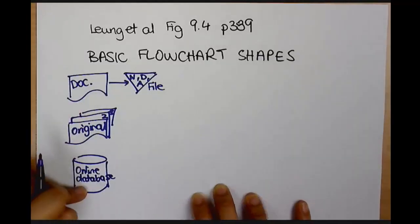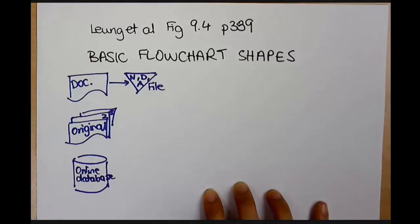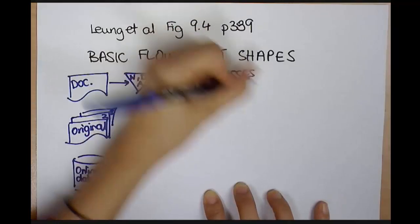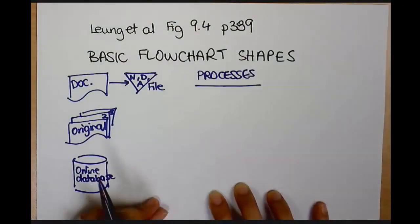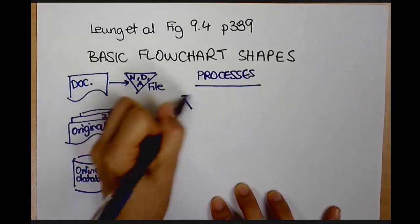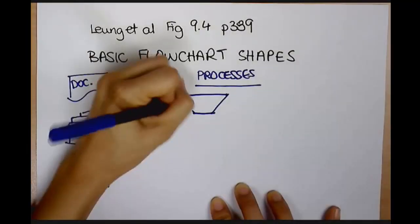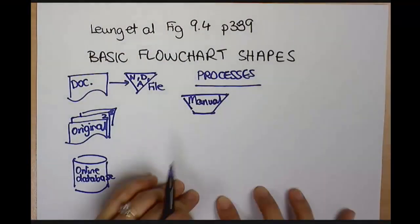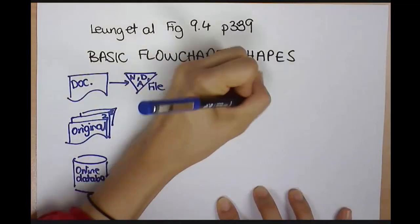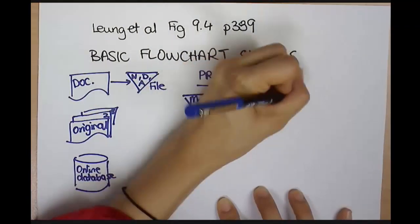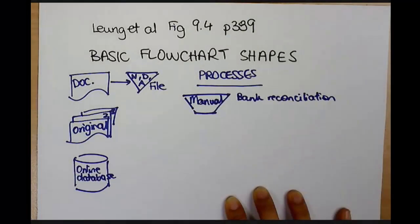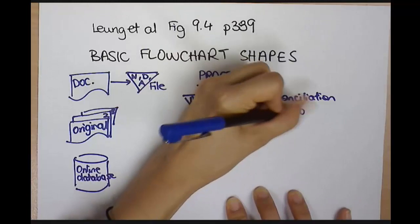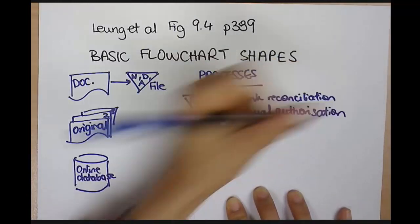Alright, so these are items. What we're also going to look at is processes that happen within the business. And the first process I'm going to talk about is this little one here. So that shape is when I do something manually. So that sort of manual shape could be something like a bank reconciliation. It could be a matching. It could be a manual authorization. Alright, so this is anything manual.